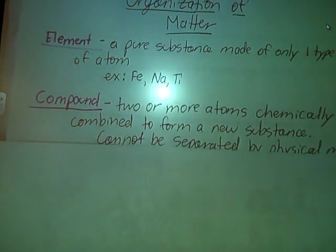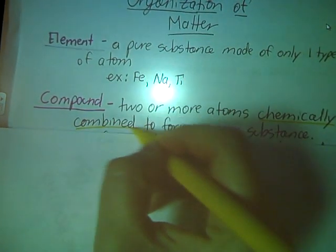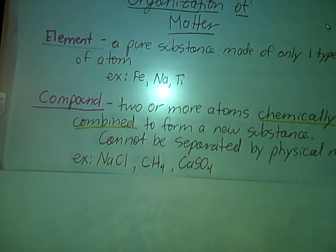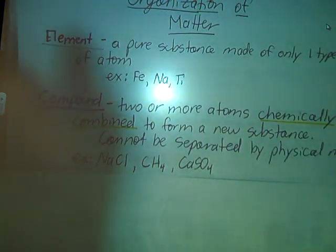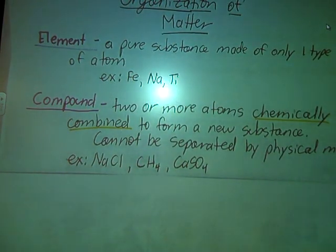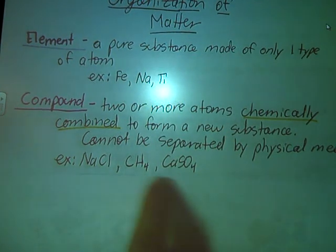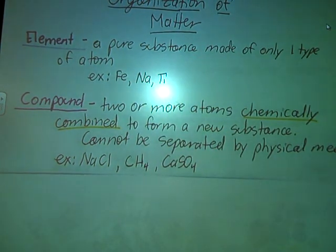When I take two or more atoms and I react them together, I make what's called a compound. A compound is two or more atoms chemically combined to form a new substance. Emphasis here on chemically combined. We have electrons interacting with each other to form this new substance, and they cannot be separated by physical means. Things like sodium chloride (NaCl), methane (CH4), and calcium sulfate (CaSO4). I can't just pull those atoms apart.